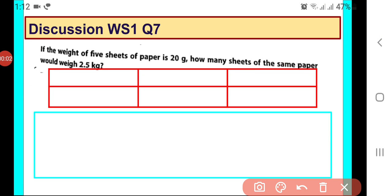Hello dear students, let us discuss this question. If the weight of 5 sheets of paper is 20 grams, how many sheets of same paper would weigh 2.5 kilograms?